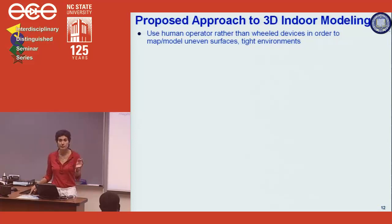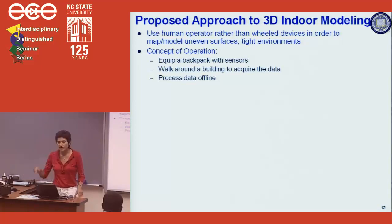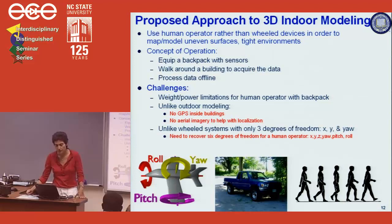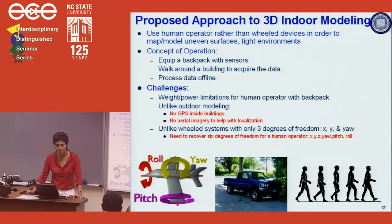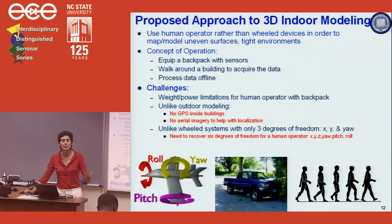Our approach uses a human operator rather than a wheeled device. The human operator is simpler because we don't have to wait for robots that can climb stairs or solve obstacle avoidance and navigation problems. The human operator can go in tight and difficult places to map. The concept of operation: equip a backpack with sensors, walk around the building, collect the data, and when done, press a button and out comes the model. Challenges include weight and power limitations, no GPS inside buildings, no aerial images, and we assume we know nothing about the building.